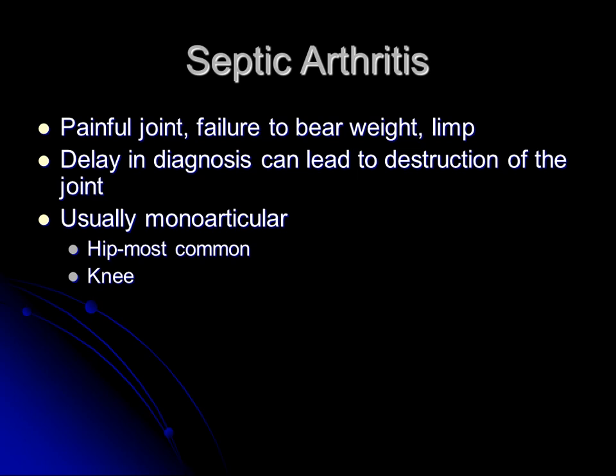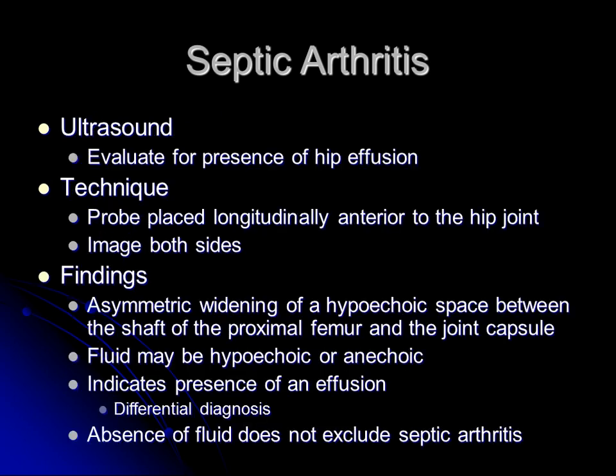Ultrasound is used to identify the presence of hip effusion using an anterior technique, going anterior to the hip joint to look at the femoral head-neck junction, which in a child is partly cartilaginous. I find it helpful to image both sides — I don't use an absolute measurement, I look for asymmetry. I like a buddy shot with both sides right next to each other. You look for asymmetric widening of the joint space between the shaft of the proximal femur and the joint capsule. The fluid can range from anechoic to hypoechoic, but the character of the fluid is not a predictor of the type of effusion — it just indicates the presence of an effusion.